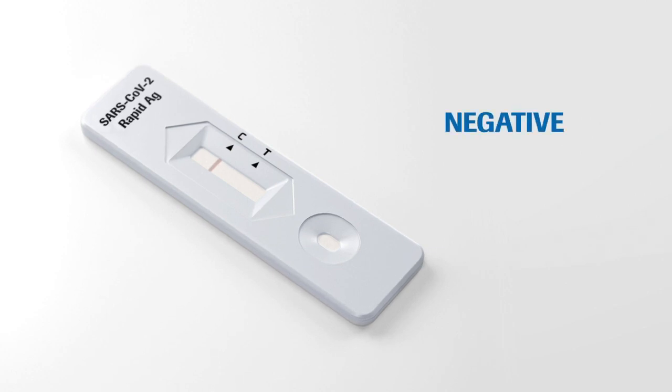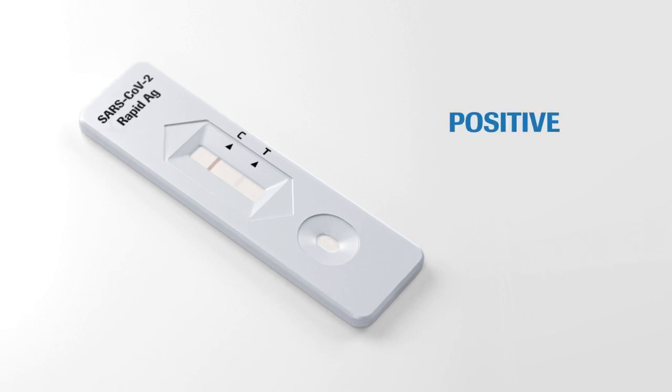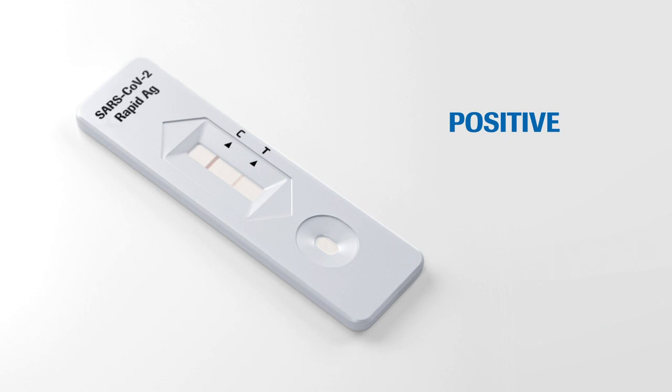In the case of a negative result, only this line appears. In case of a positive result, a colored line appears in the lower section of the result window. This is the test line T. Even if the test line is very faint or not uniform, the test result should be interpreted as a positive result.